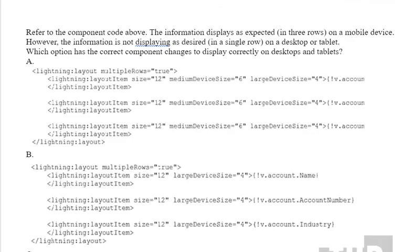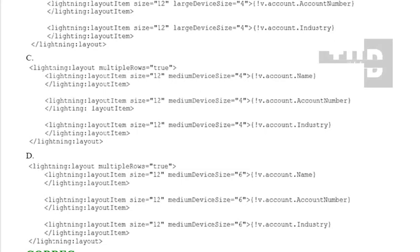Refer to the component code above. The information displays as expected in three rows on a mobile device. However, the information is not displaying as desired in a single row on a desktop or tablet. Which option has the correct component changes to display correctly on desktop and tablets? See the options: option A, option B, option C, and option D.